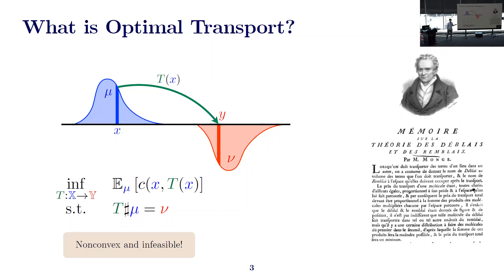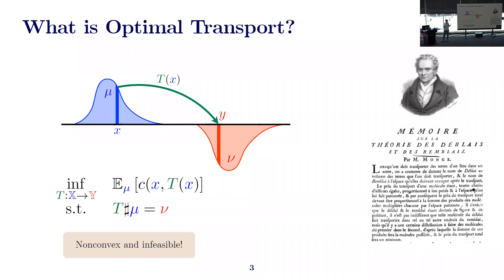While the Monge optimal transport problem has received several applications in engineering, it's not really computationally attractive. This minimization problem is non-convex because it introduces a non-linear equality constraint. Also, the Monge problem can be easily infeasible — the optimal transport cost between two relatively simple distributions can be plus infinity. For example, if mu is a one-point Dirac measure and nu is a two-point distribution, you cannot find a map that moves unit probability mass from mu to a single point in nu, making the problem infeasible.